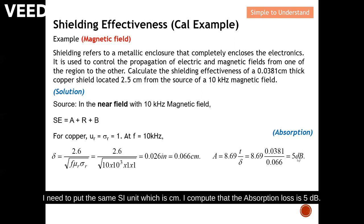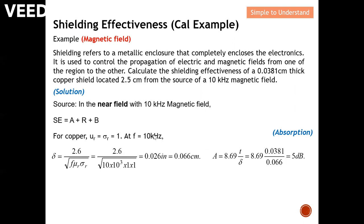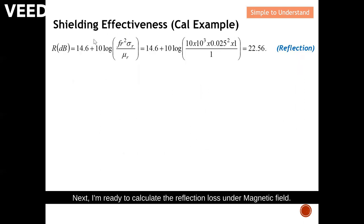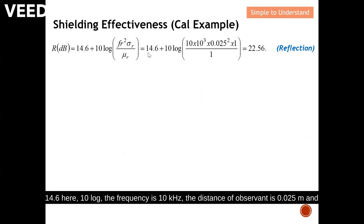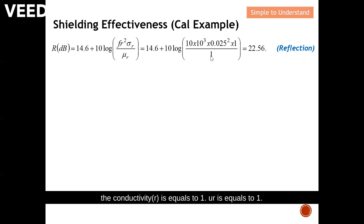Next, I calculate the reflection loss under magnetic field using a different equation. The formula uses 14.6, frequency (10 kilohertz), distance of observation (0.025 meter), conductivity_r (1), and mu_r (1). From here I compute that the reflection loss for magnetic field is 22.56 dB.